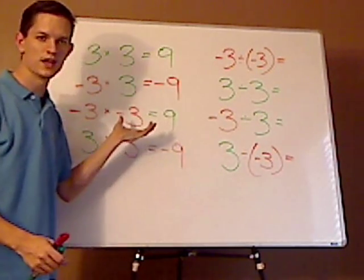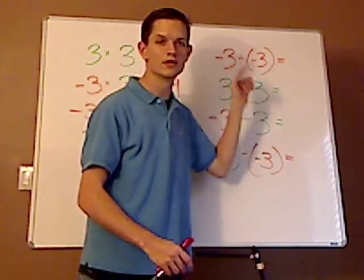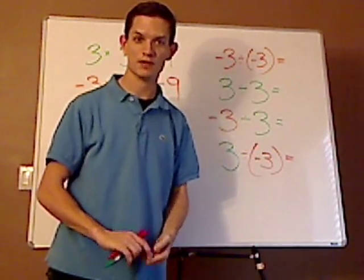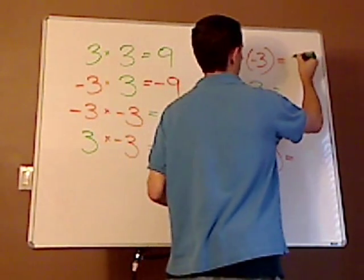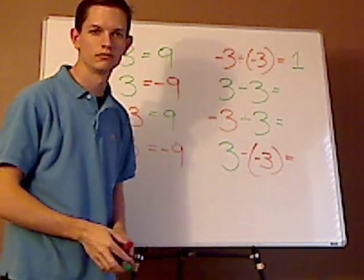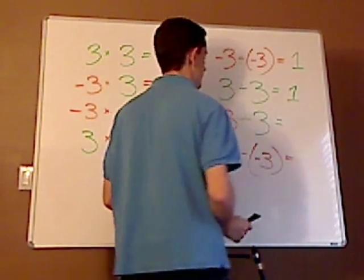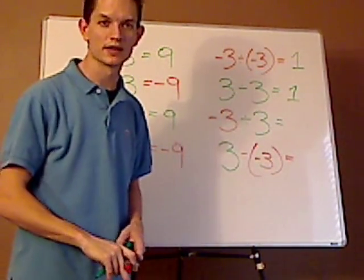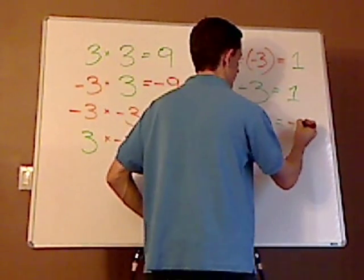Whatever rules apply to multiplication also apply to division. So, if you have a negative 3 divided by a negative 3, what would that be? Yeah, it would be a positive 1. 3 divided by 3? Yeah, again, it's a positive 1 because the signs are the same. And, what's a negative 3 divided by a positive 3? Right. That's going to give you a negative 1.